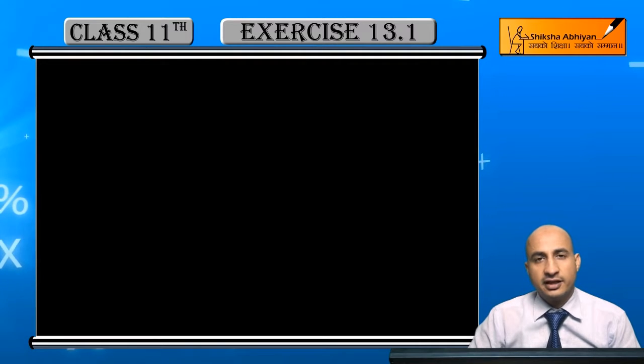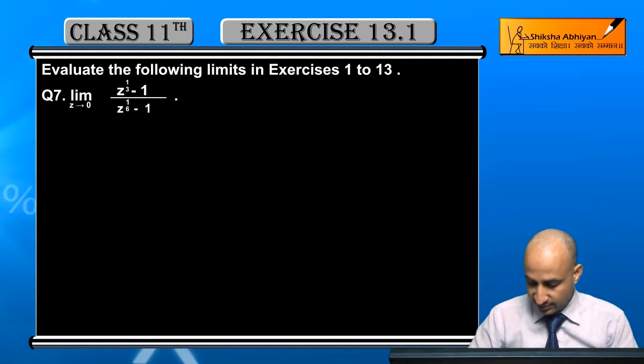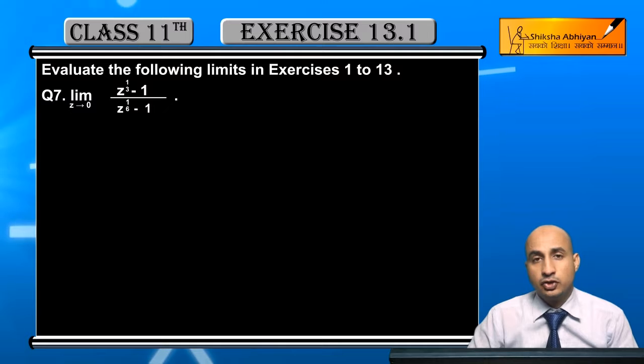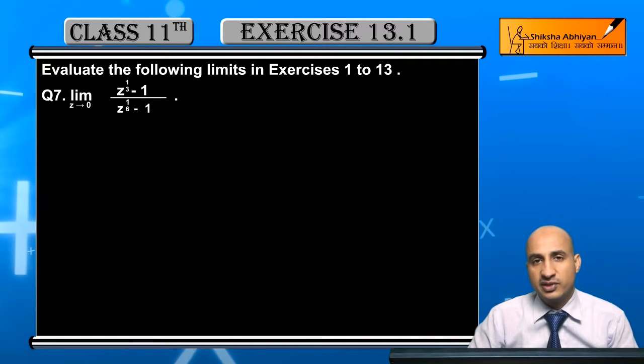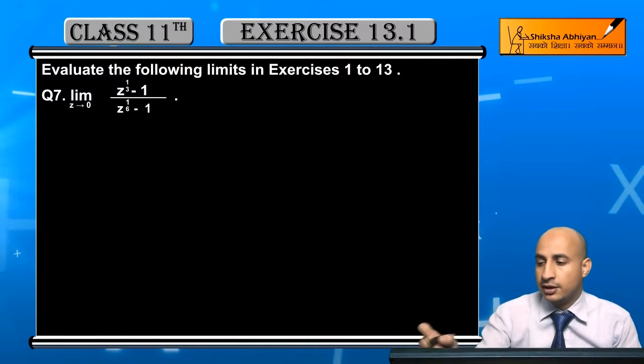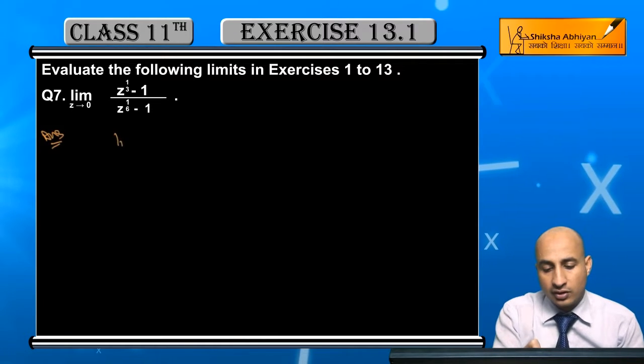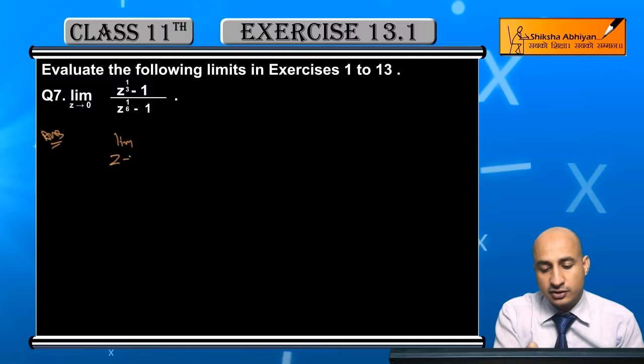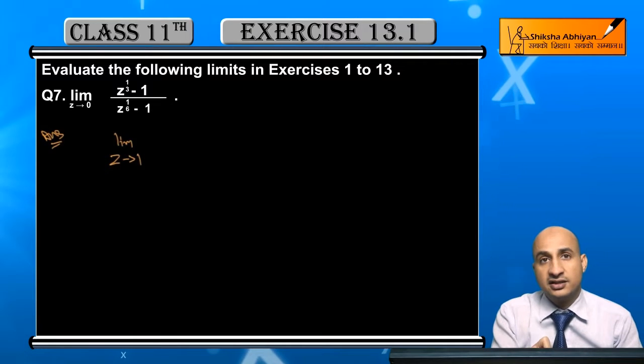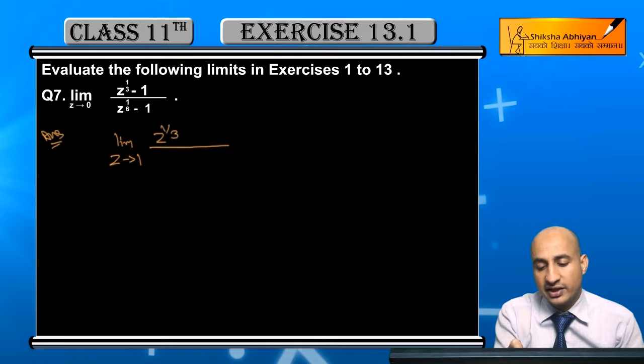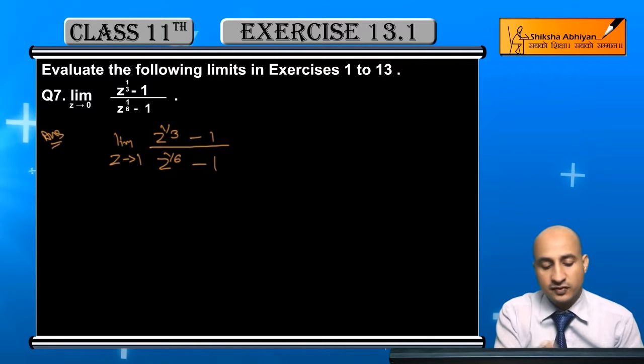Now question 7. Question 7 ke under, evaluate the limit z tending to 1, z to the power 1/3 minus 1 upon z to the power 1/6 minus 1. We write down the question: limit z tending to 1, z to the power 1/3 minus 1 upon z to the power 1/6 minus 1.